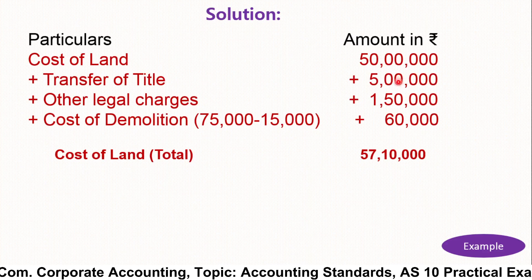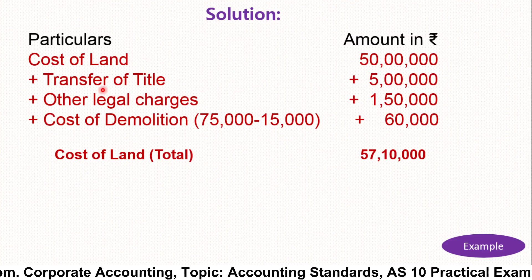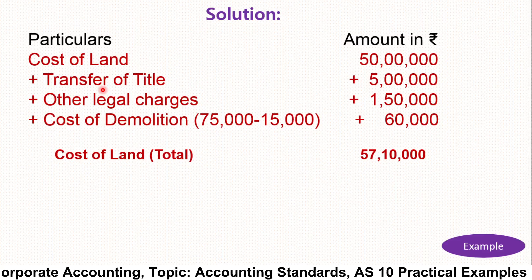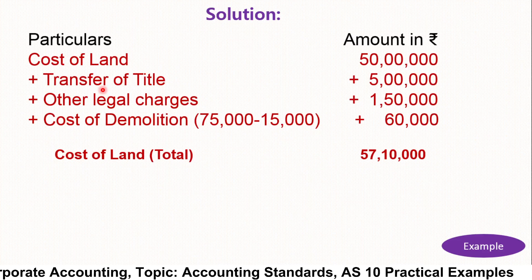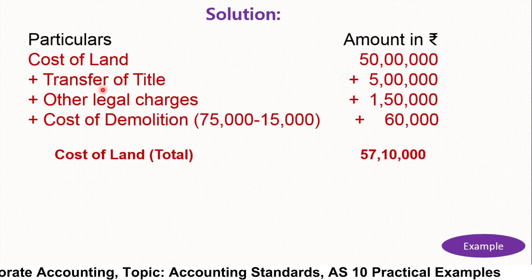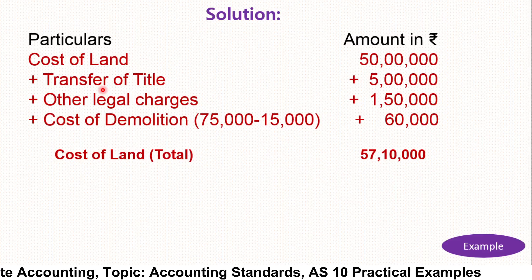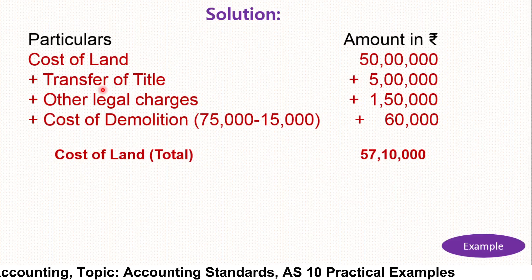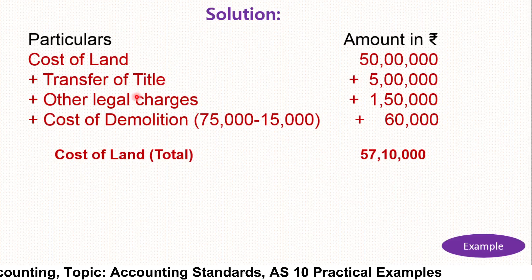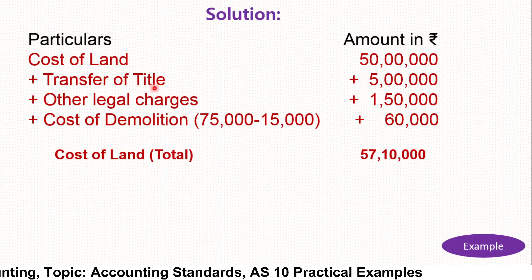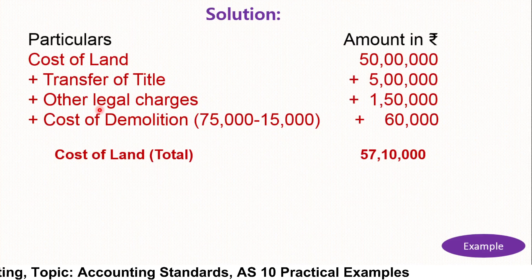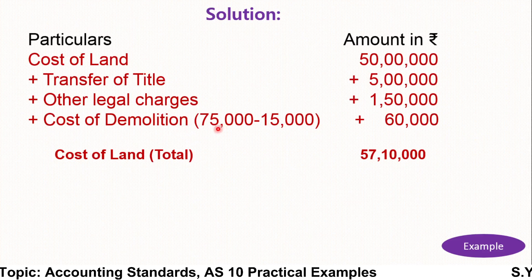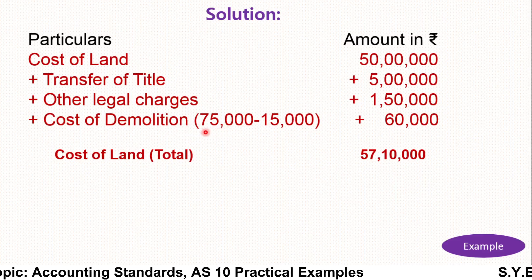In the solution for the cost of land, first you add the cost of land — that is rupees 50 lakh. Then you add the transfer of title, which is the legal fee paid to clear ownership of the land. Other legal charges are rupees 1,50,000. The cost of demolition, as mentioned, is rupees 75,000.